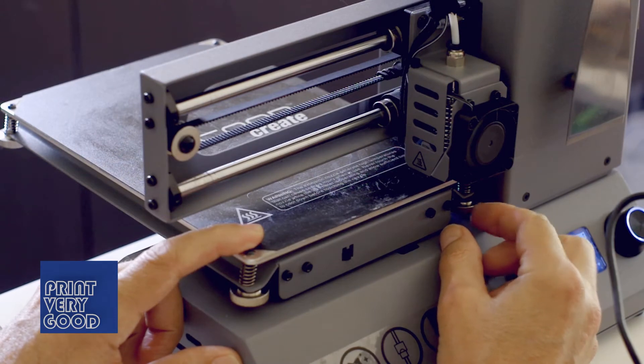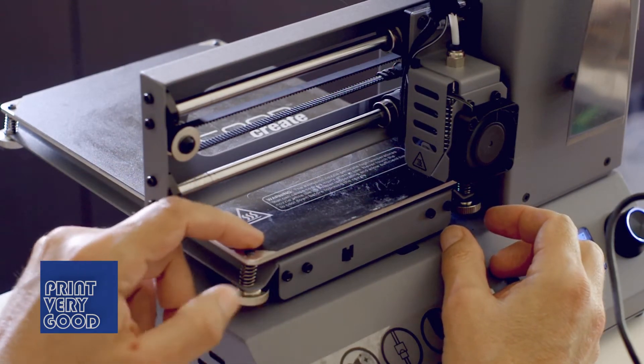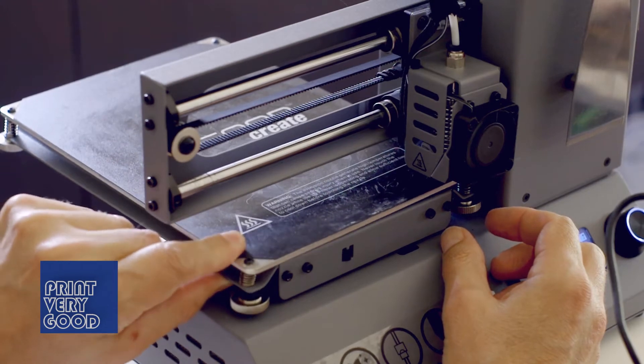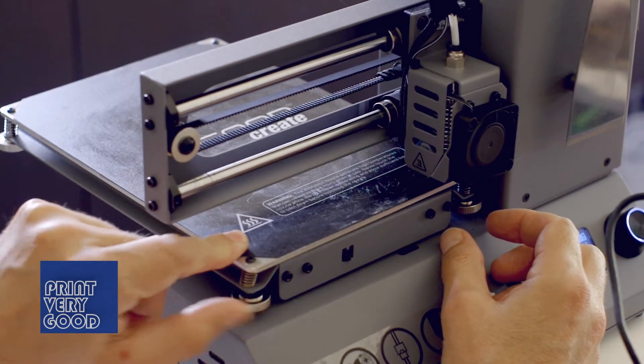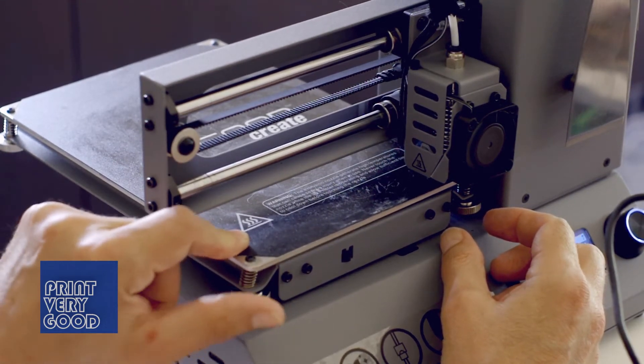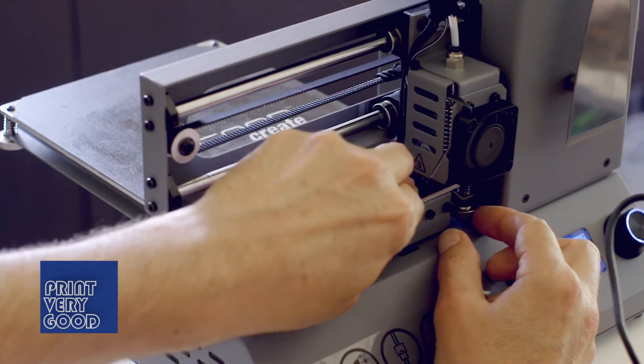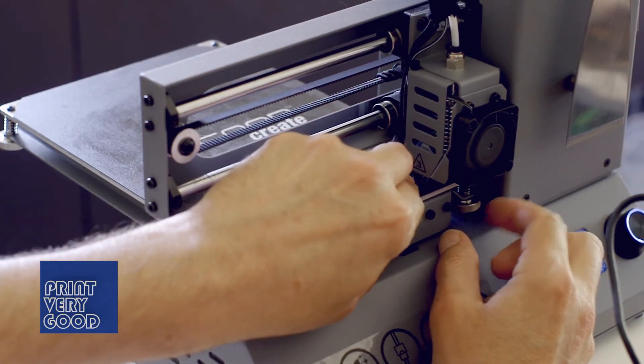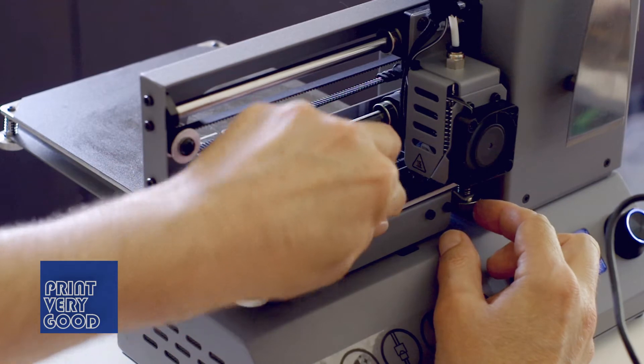I'm wondering if the adjustment screws at the front of the bed somehow vibrated loose and came off the threads of the screws, which allowed the front of the bed to pop up about a centimeter, which caused the part to press into the hotend.